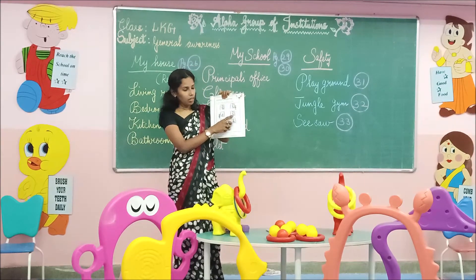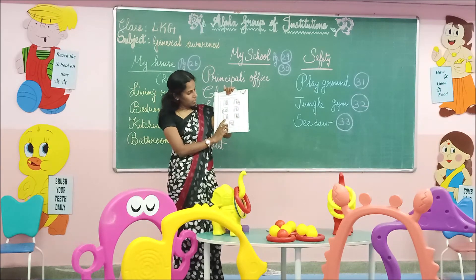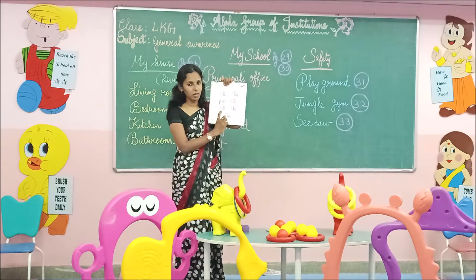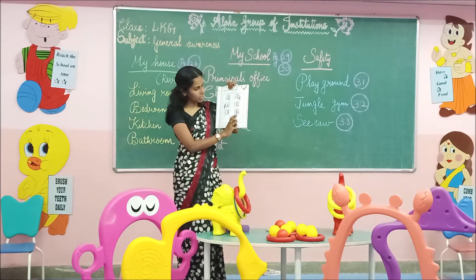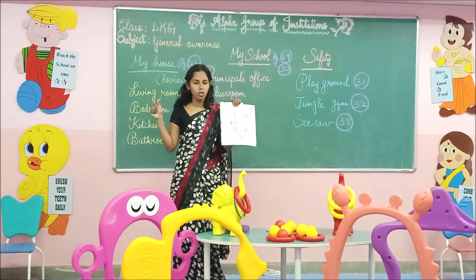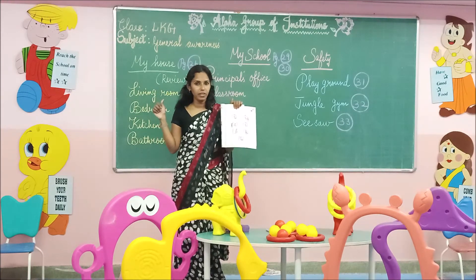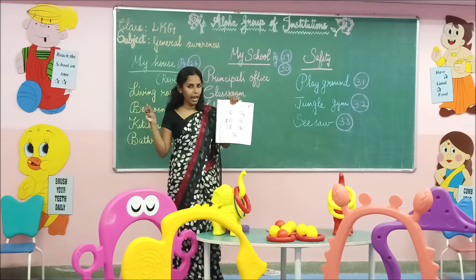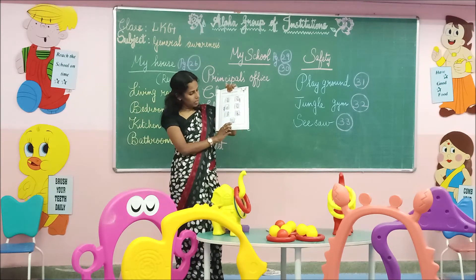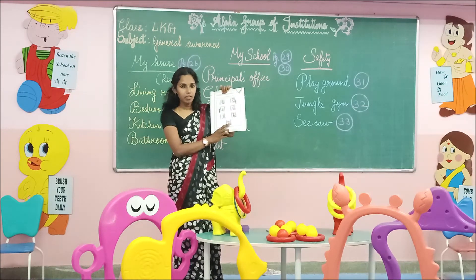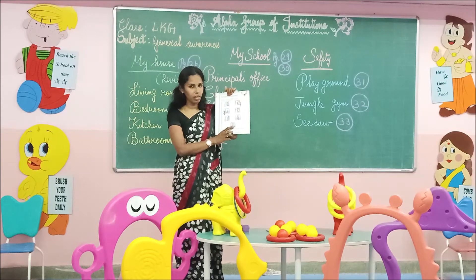This girl is standing on the swing — this is wrong, you should not do this. This boy is jumping from the swing — you should never jump from the swing; you should sit and swing. This girl is not holding the ropes of the swing — you should hold the ropes or chain; otherwise you may fall out. You should hold the chain with your hand. One girl is sitting and a boy is sitting on her lap — you should not do this while swinging. Only one should sit and swing.